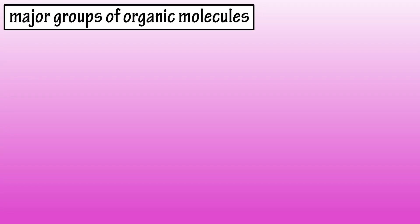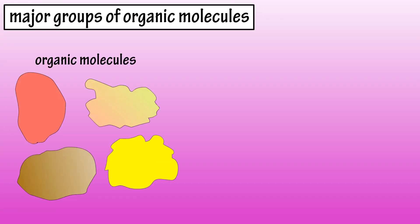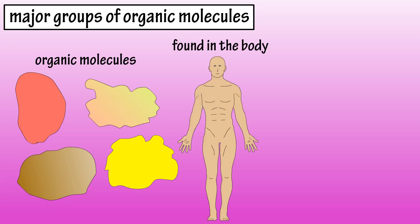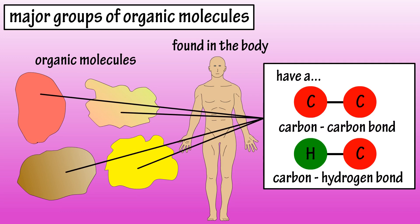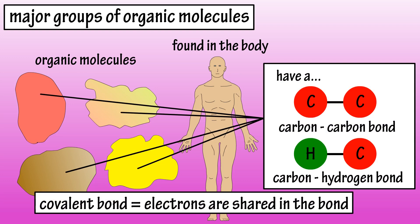The Major Groups of Organic Molecules. Organic molecules are found in living systems, including the human body, and are generally defined as compounds that contain molecules that have a carbon-carbon covalent bond or a carbon-hydrogen covalent bond, covalent bonds being bonds where electrons are shared between the atoms.